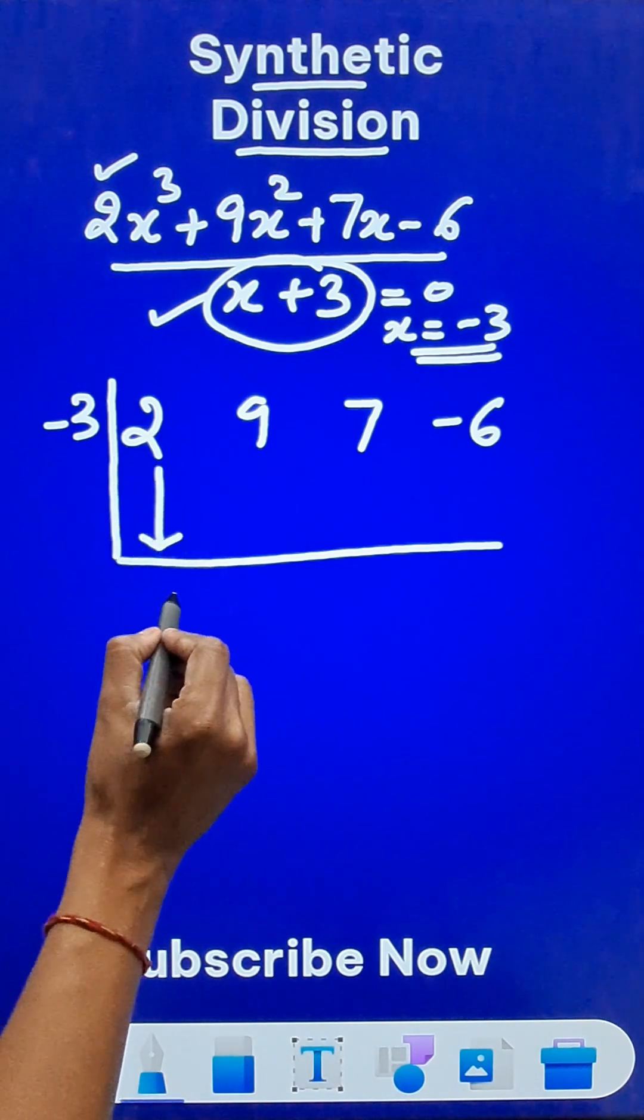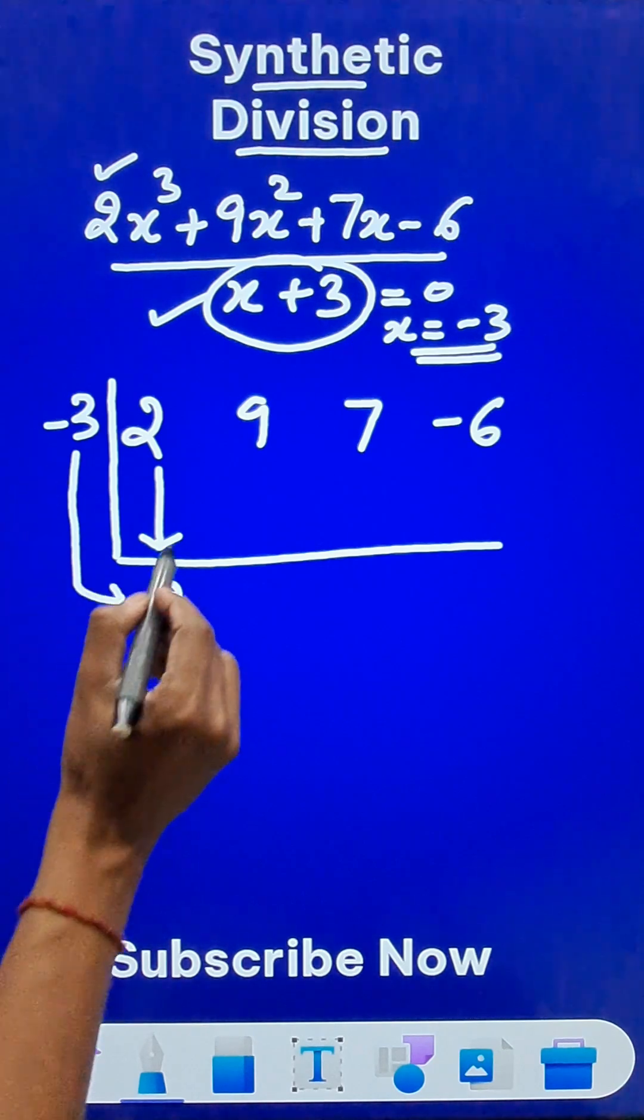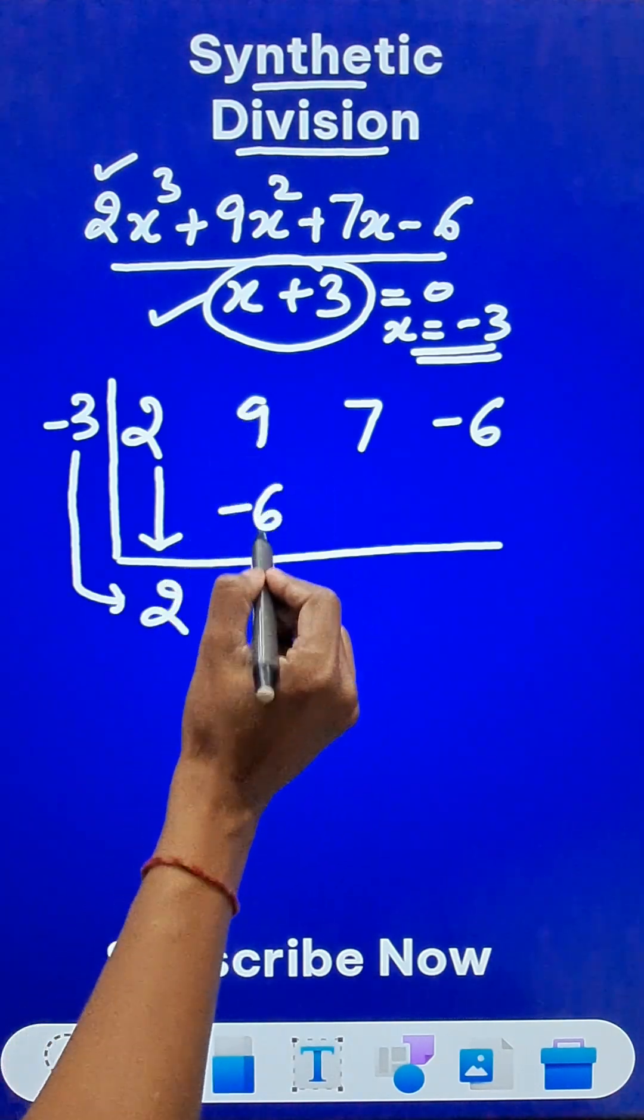Now, leave the 2, I mean you need to bring down the 2 without any change. Multiply -3 by 2, you get -6, write it below 9. 9 - 6 is 3.